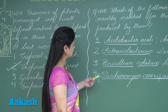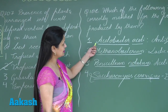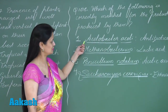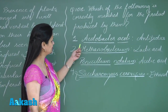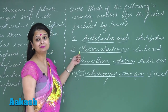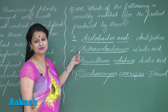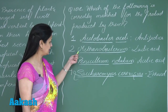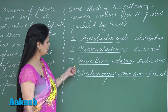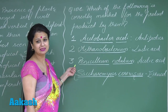Acetobacter aceti is involved in the synthesis of acetic acid, so this is wrong. Methanobacterium is a methanogen involved in the production of methane gas.